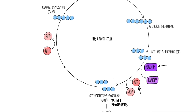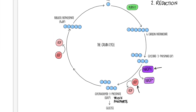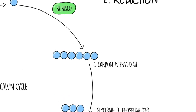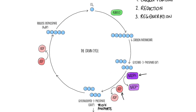Now we've regenerated ribulose bisphosphate, we can continue the cycle. So the third step is regeneration of RuBP. To summarize, the three stages of the Calvin cycle are: carbon fixation — sticking carbon dioxide into ribulose bisphosphate to create a six-carbon molecule, catalyzed by RuBisCO; then reduction of glycerate-3-phosphate into triose phosphate or GALP, using the products of the light-dependent reaction; and GALP can be converted into glucose once you've done six turns of the Calvin cycle. The rest is used to regenerate ribulose bisphosphate, which requires ATP, and then the cycle can continue.